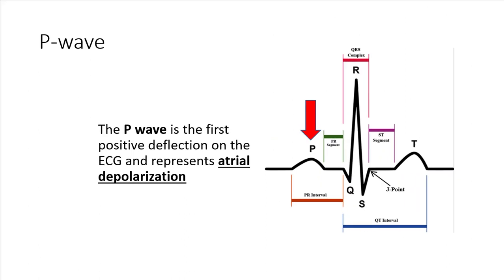The P wave is the first positive deflection in a heartbeat. On the monitor, it shows that the atria have fired — what we call depolarizing — and it goes above the isoelectric line, which is an imaginary line drawn straight across the bottom of the PQRS complex. Everything else plays off that isoelectric line.